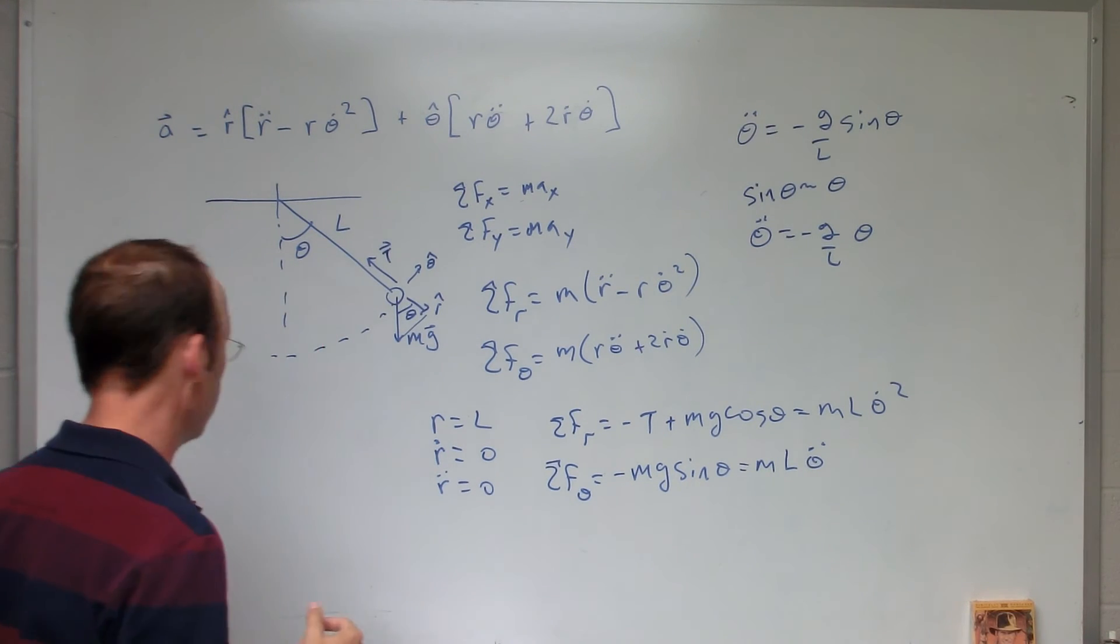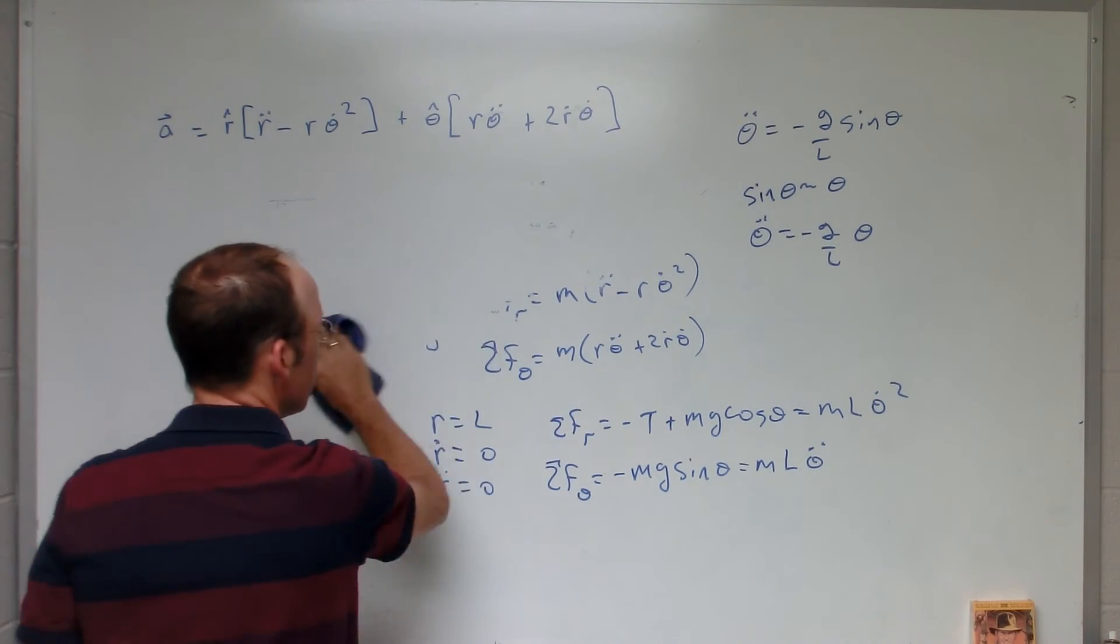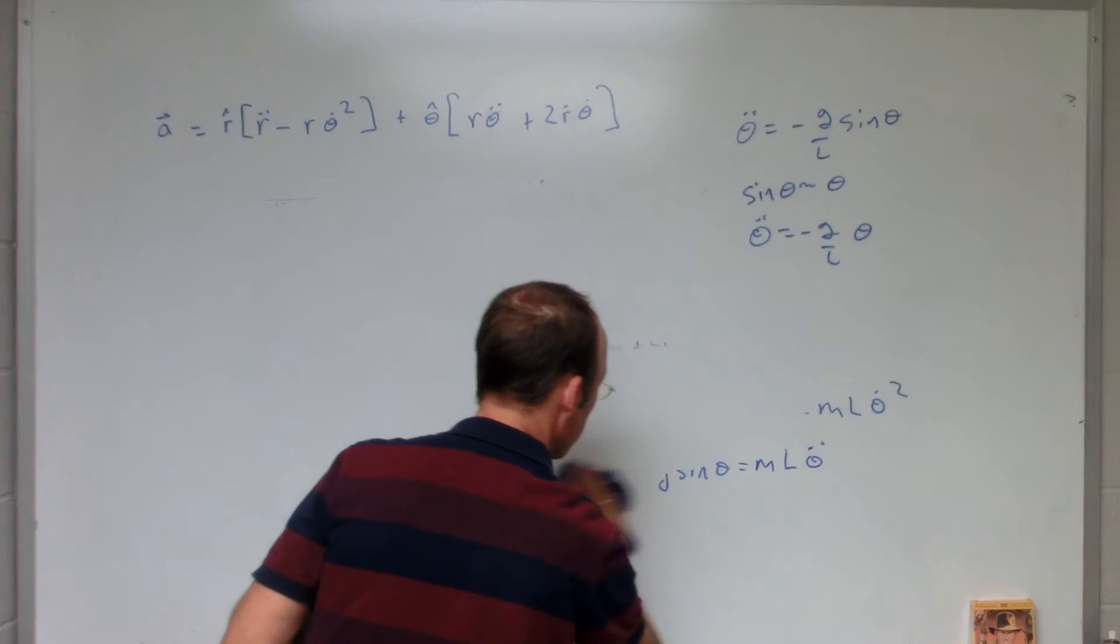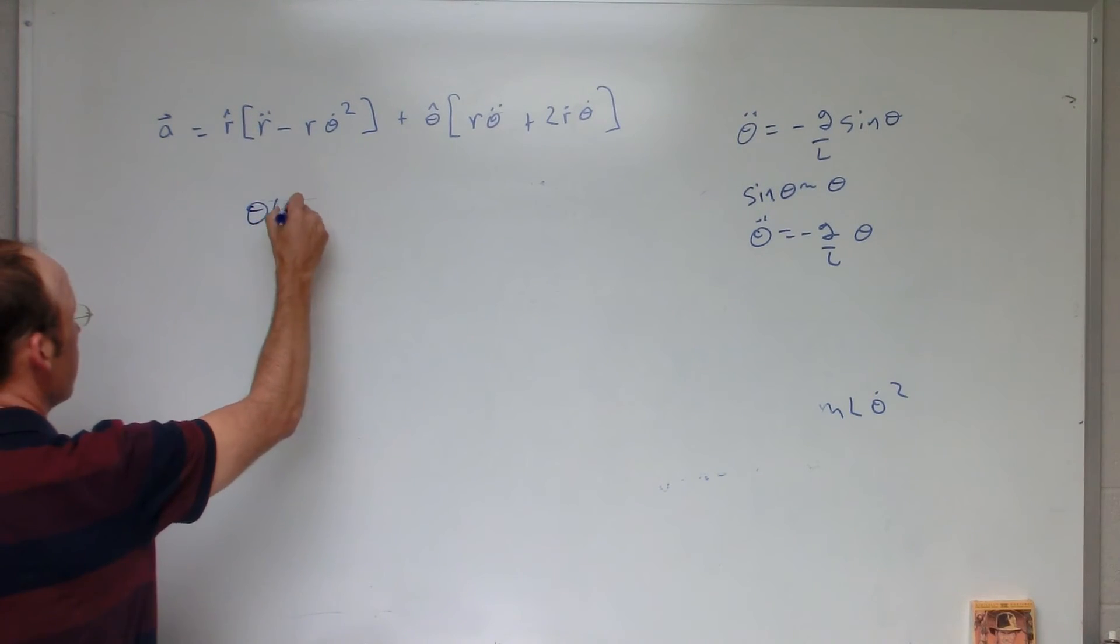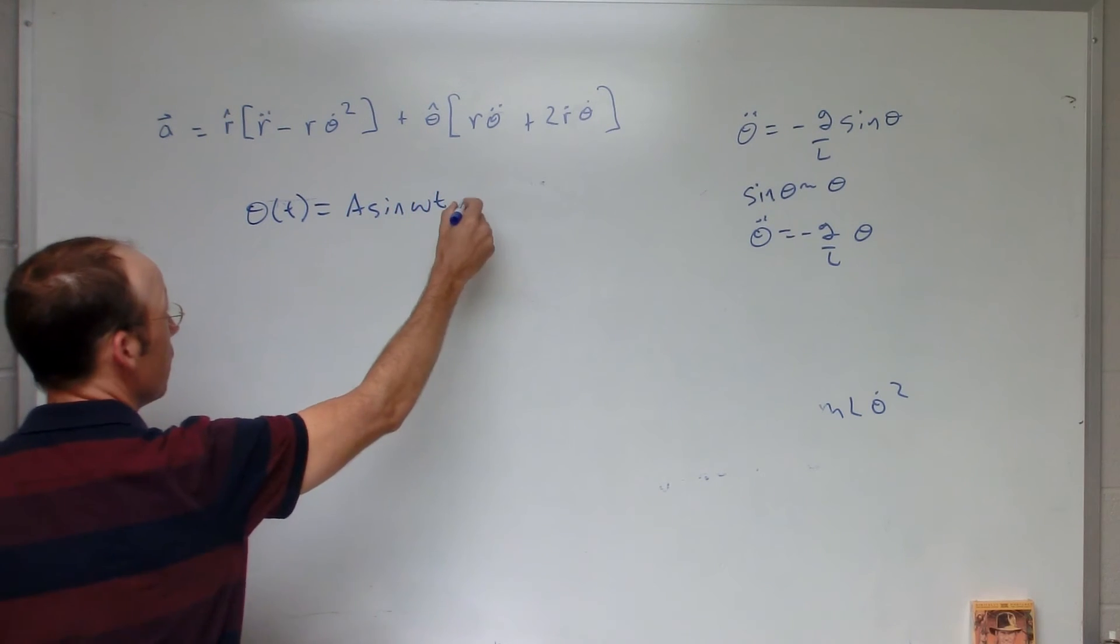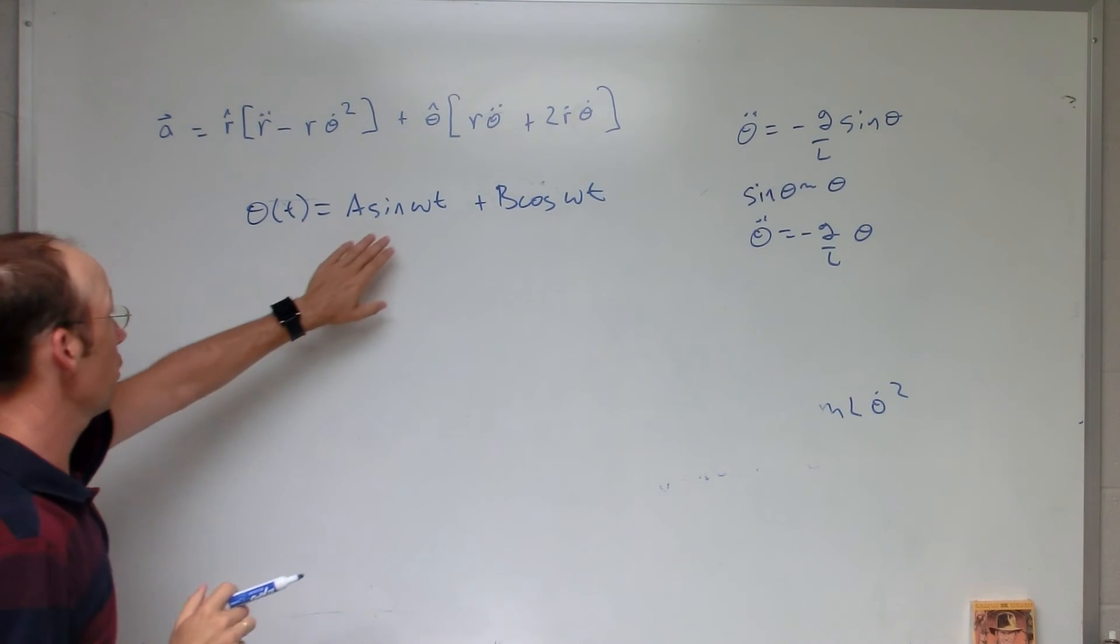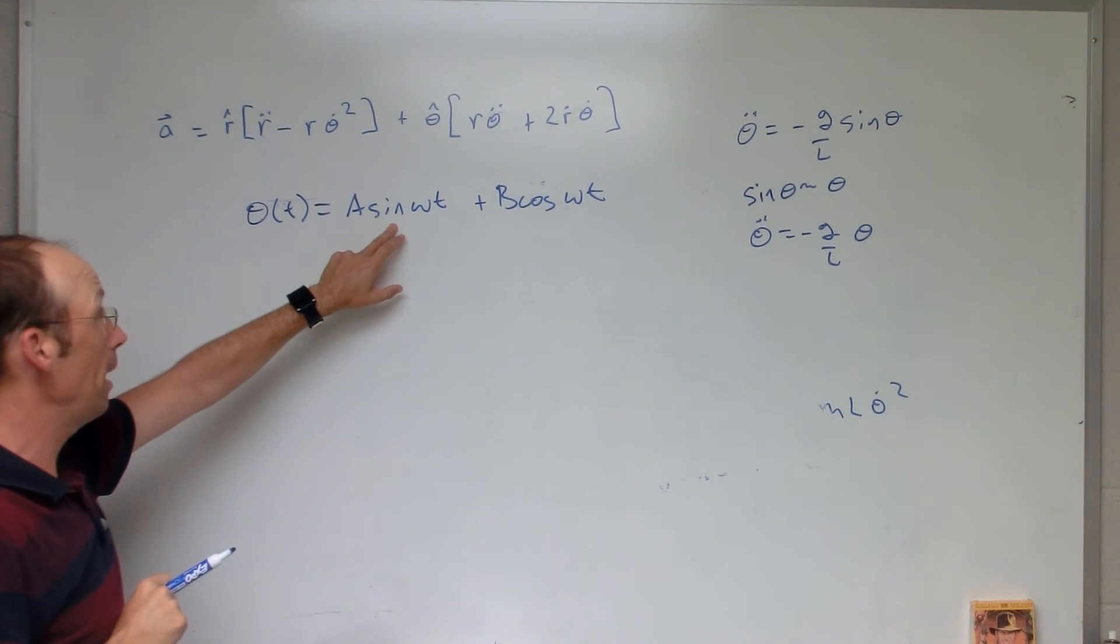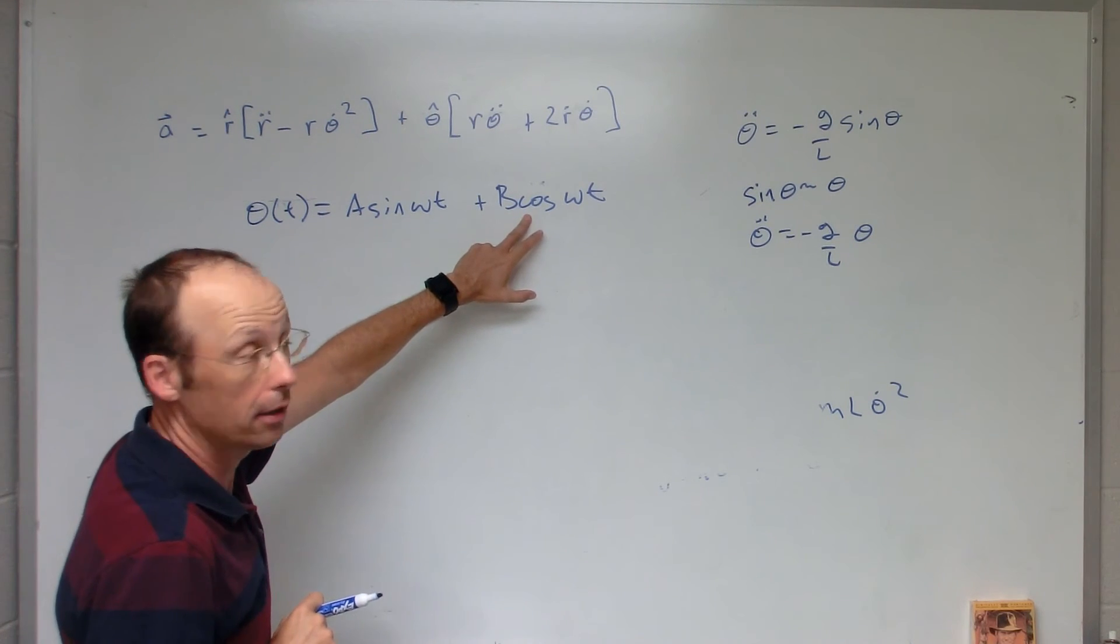So if I guess theta as a function of t equals a sine omega t plus b cosine omega t, when I take the derivative of this twice, I get omega squared sine omega t, negative omega squared sine omega t. And the same thing over here, I get negative b omega squared cosine omega t.